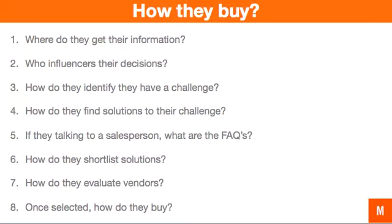If they phone you and speak to a salesperson or come into your store, what questions do they ask? How do they shortlist solutions? How do they evaluate vendors they've shortlisted? And once selected, how do they buy — is it simply handing over a credit card, is there an approval process, do they need a family member's permission or a purchase order? Remember, there are multiple solutions to any one of these questions. If somebody dislikes their neighbor and you're selling walls, they could also plant a hedge or sell their house. So answer these questions in the context of the challenge the persona has, not only in the context of your product.